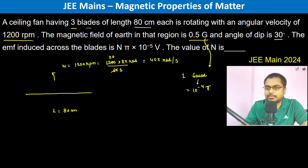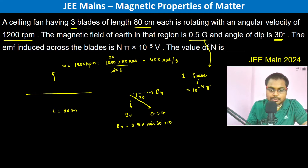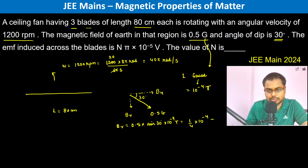The angle of dip is 30 degrees. So basically, the magnetic field in that region is 0.5 gauss in a direction with dip angle of 30 degrees. This gives us the horizontal and vertical magnetic field components. The vertical magnetic field is 0.5 into sin 30 degrees into 10 to the power minus 4 tesla, and since sin 30 is 1/2, this becomes 1/4 into 10 to the power minus 4 tesla.